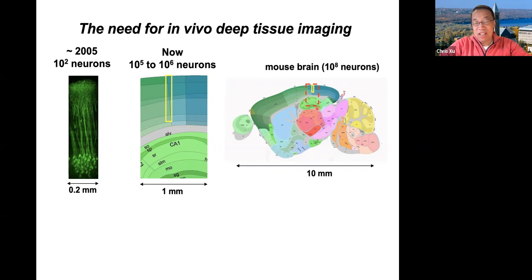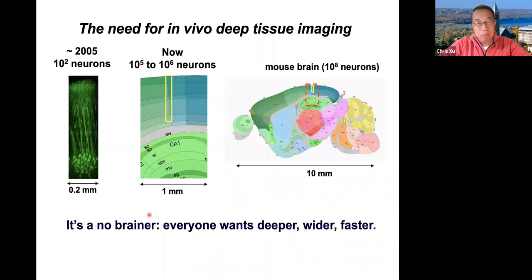But if you just look at the mouse brain — not even talking about the human brain — we are still scratching the surface. In some sense, our knowledge of the brain is very superficial, really because we couldn't see very deep. So it's a no-brainer: every researcher wants deeper, wider, and faster imaging techniques.